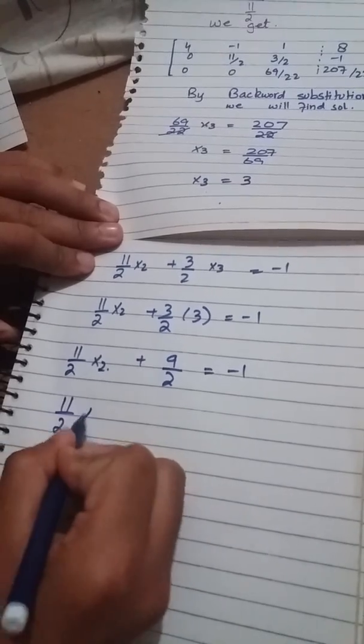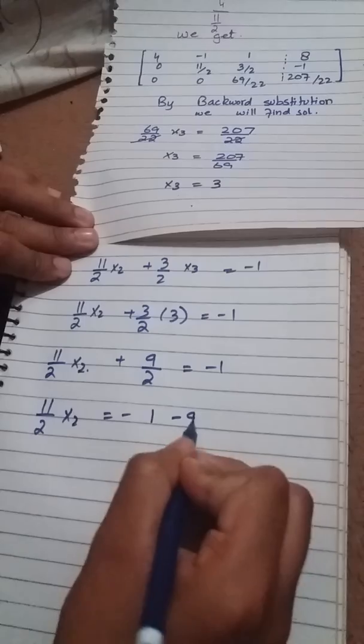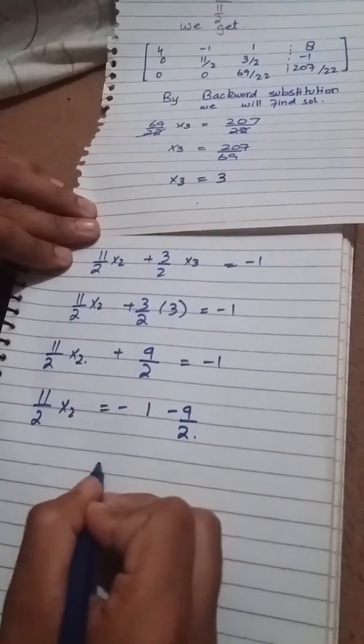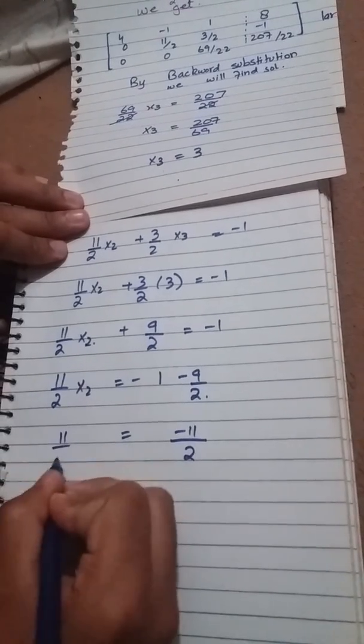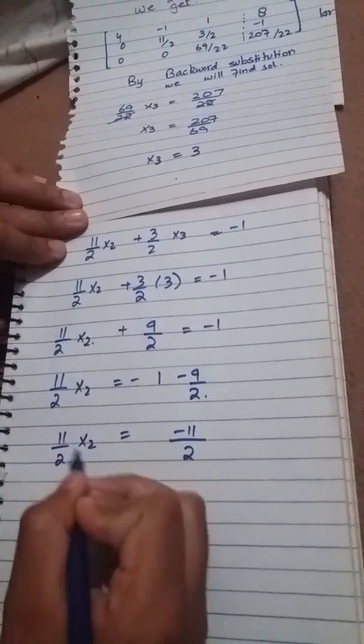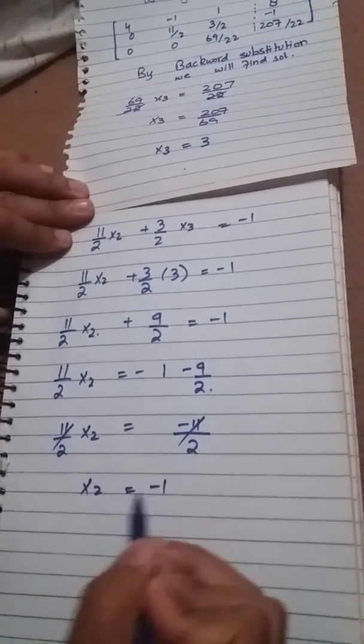Now 11/2 X2 is equal to -1 minus 9/2. 11/2 cancels. X2 is equal to -1.